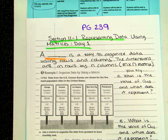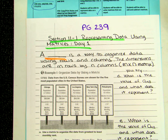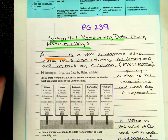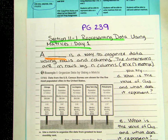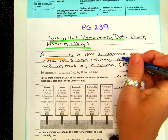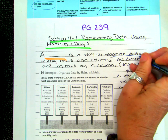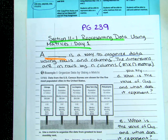We're going to start Module 11, called Matrices. There's a movie called The Matrix — really good with Keanu Reeves. Has anybody ever seen it? Matrices are used to organize data, similar to what we do in a coding class.